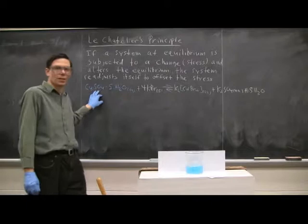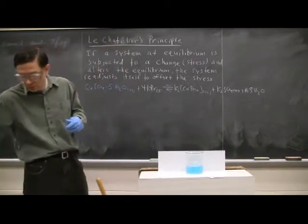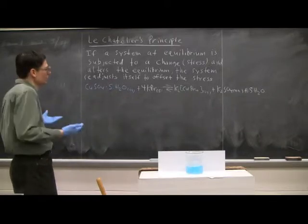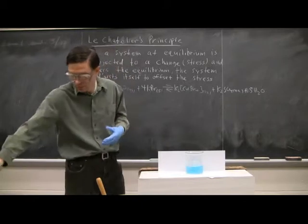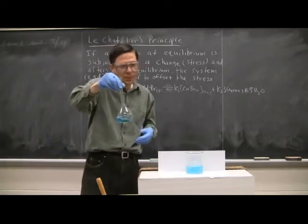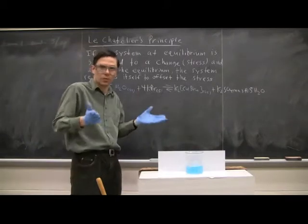We have copper sulfate pentahydrate. This is a very small amount, 5 grams in a 250 milliliter volumetric flask. That's what originally was here. And we see that we have a blue colored solution, a very pretty blue color.